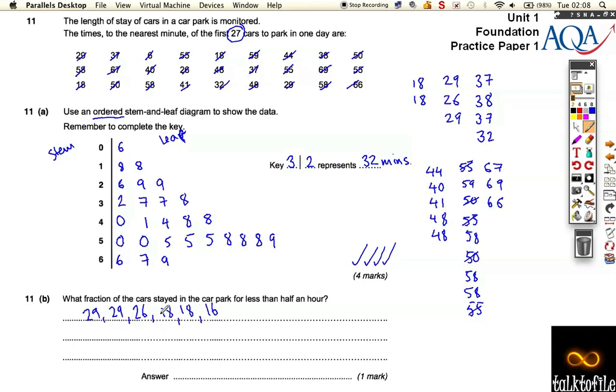That's 1, 2, 3, 4, 5, 6 different numbers. There was a total of 27 in my whole diagram, so it's 6 out of 27. It doesn't say I have to simplify it, but I think you probably should with these questions. It's not probability, just a straight fraction. You find that 3 goes into both